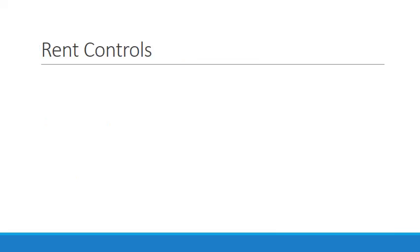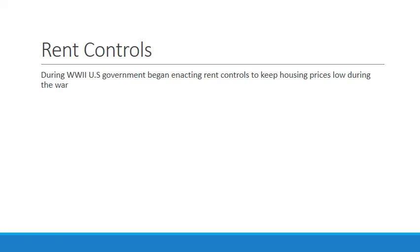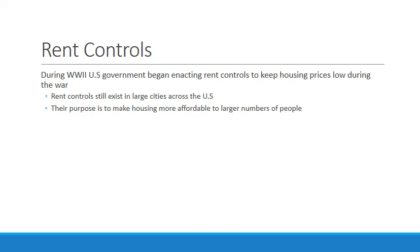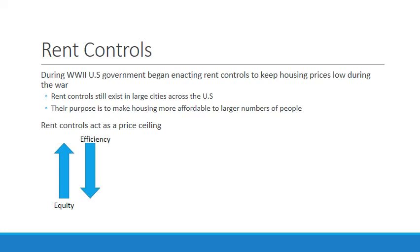A second major example of price ceilings is rent controls. During World War II, the U.S. government began enacting rent controls to keep housing prices low, and rent controls still exist in large cities across the U.S. today. Their purpose is to make housing more affordable to larger numbers of people — an increase in equity while decreasing efficiency. Rent controls act as a price ceiling: equity is increased, efficiency is decreased.